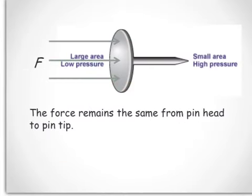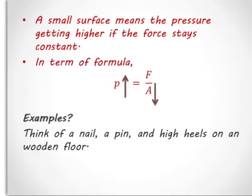This diagram illustrates a force being applied to a pin. At the pin head, the area is big, so the pressure is low. At the pin tip, the area is small, and the pressure is high. A small surface means the pressure is getting higher if the force stays constant.